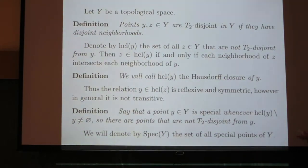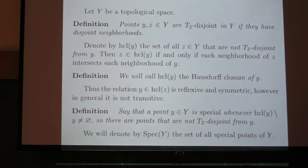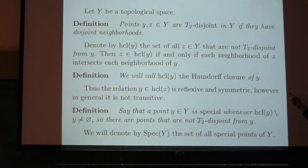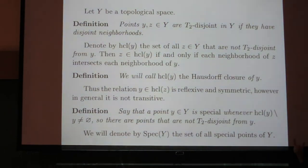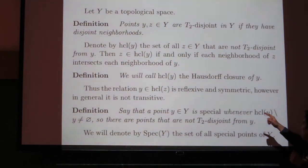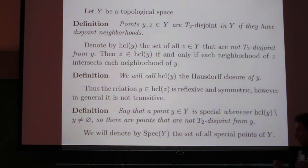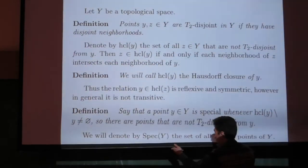That definition written on the blackboard is not symmetric with respect to y and z. This one is symmetric. We have the points and we have the symmetric definitions. They are T0-disjoint. So we have a relation on Y that is reflexive and symmetric but it is not transitive. I will do it on the blackboard.